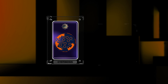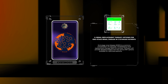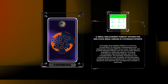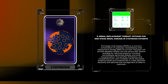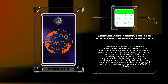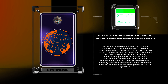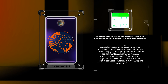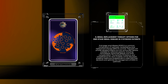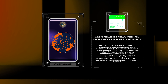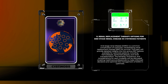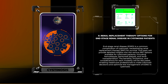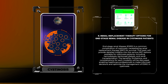End-stage renal disease, ESRD, is a common complication of Cystenosis, necessitating renal replacement therapy, RRT, for survival. This topic will provide detailed insights into the various RRT options available for Cystenosis patients, including hemodialysis, peritoneal dialysis, and renal transplantation. The benefits, limitations, and considerations for each modality will be discussed, enabling healthcare professionals to make informed decisions and optimize the management of ESRD in Cystenosis.